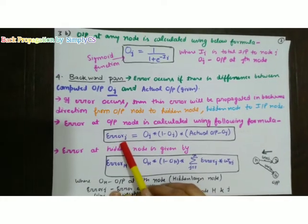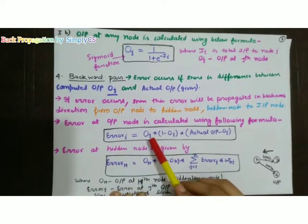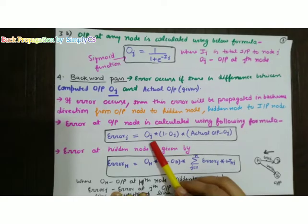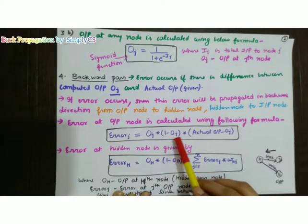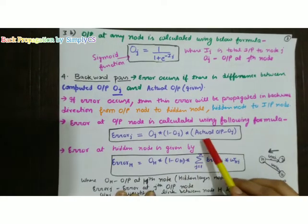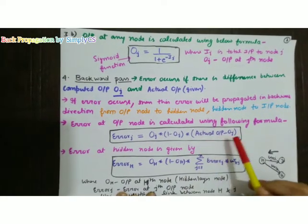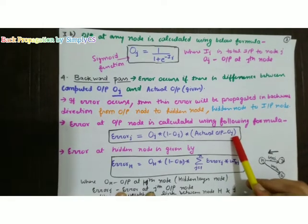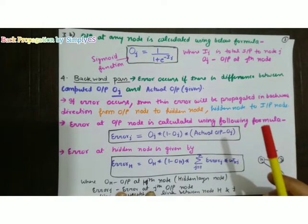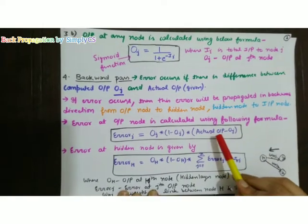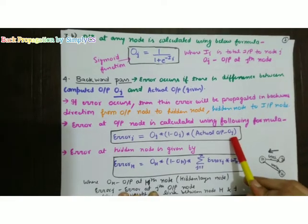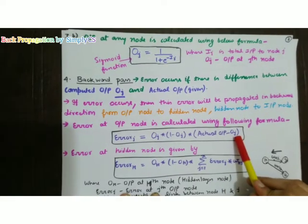The error formula is: error at j equals O_j into (1 minus O_j) into (actual output minus O_j). The actual output is the expected value from our training dataset, and O_j is the computed output.